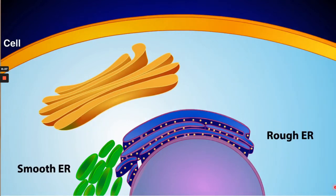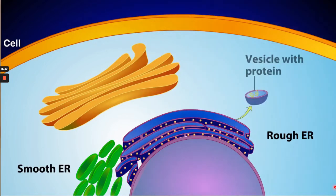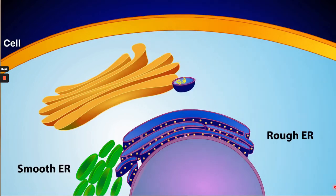Let's start a tour with the endoplasmic reticulum. There are two types: rough and smooth. The rough endoplasmic reticulum, or rough ER, is studded with ribosomes, which give it its rough appearance. Ribosomes are responsible for producing proteins, which are packaged into transport vesicles and carried to the Golgi apparatus.